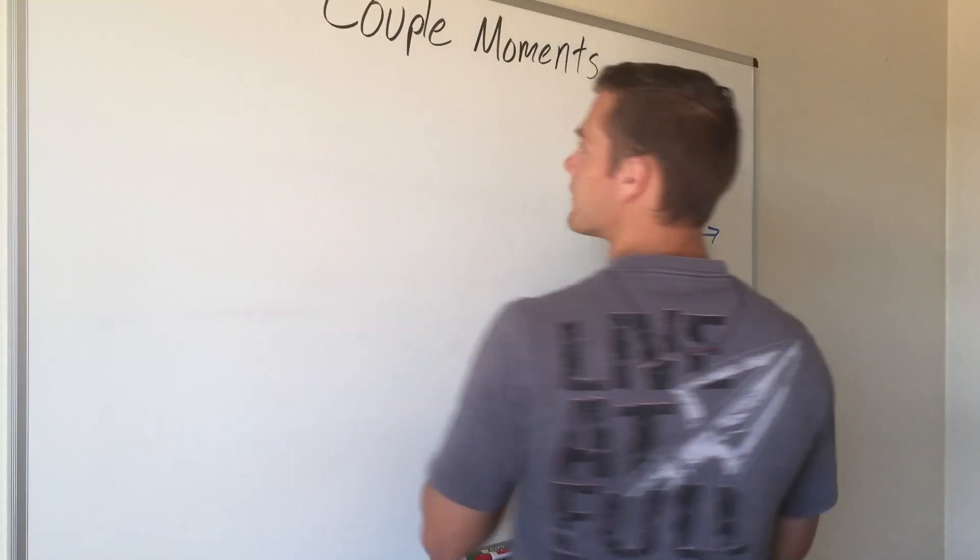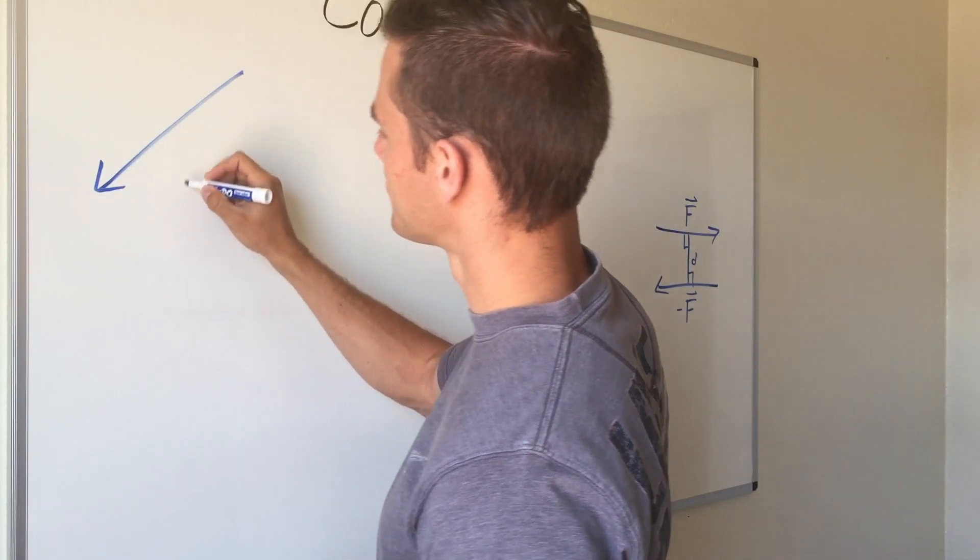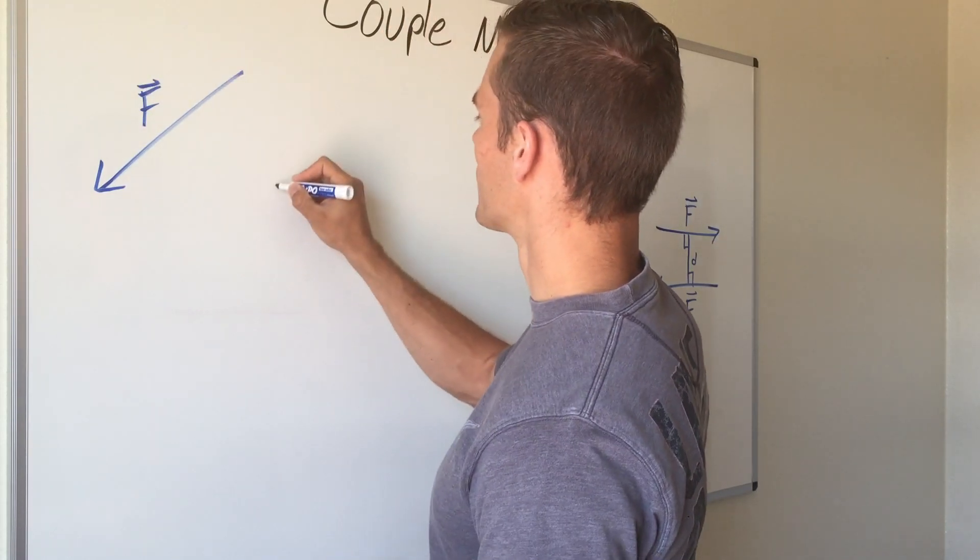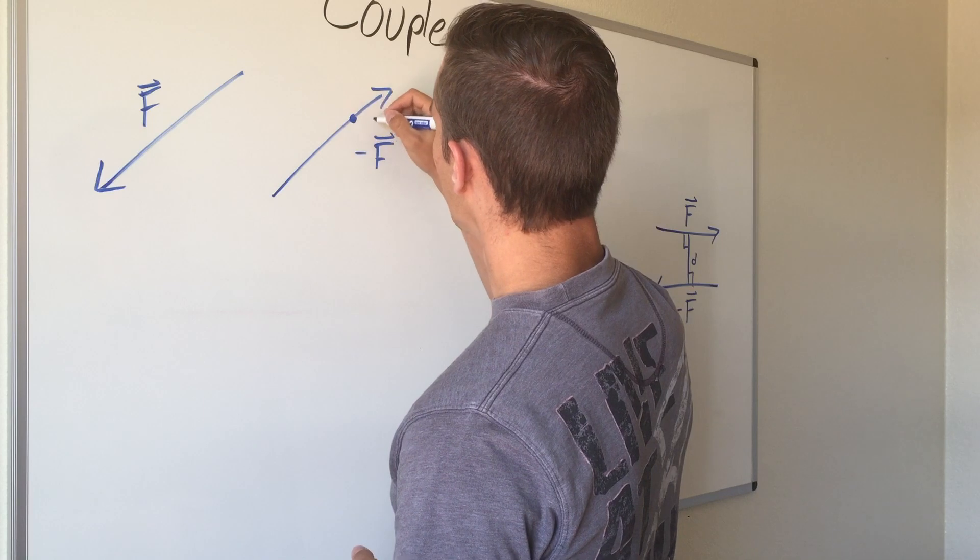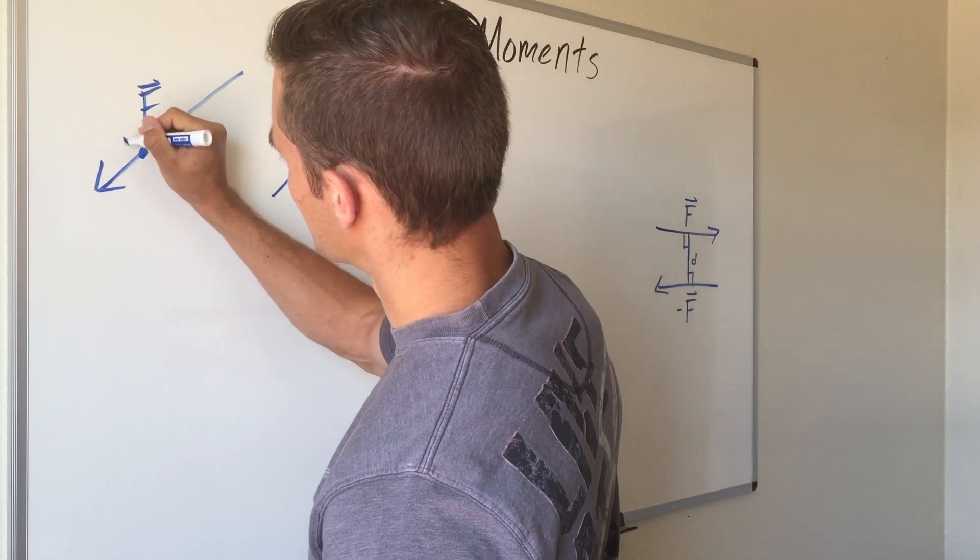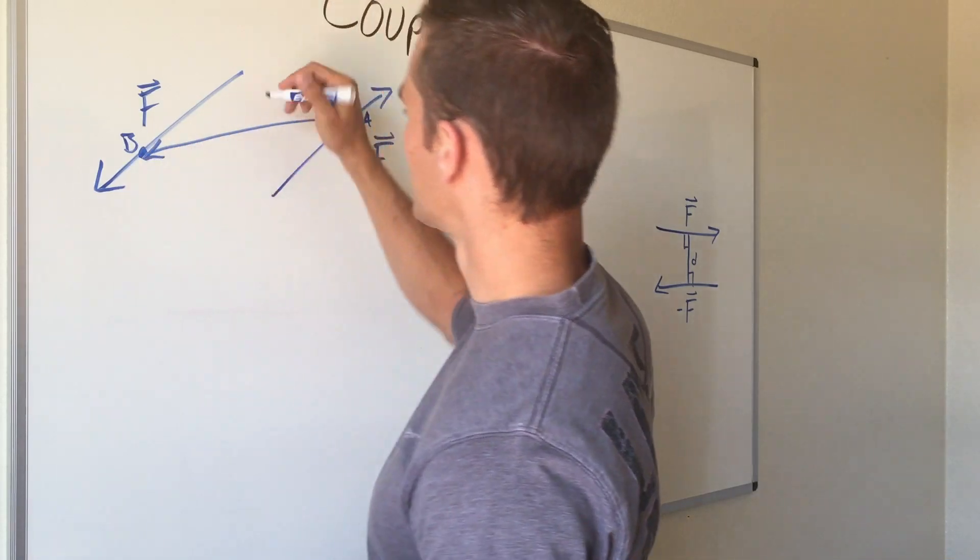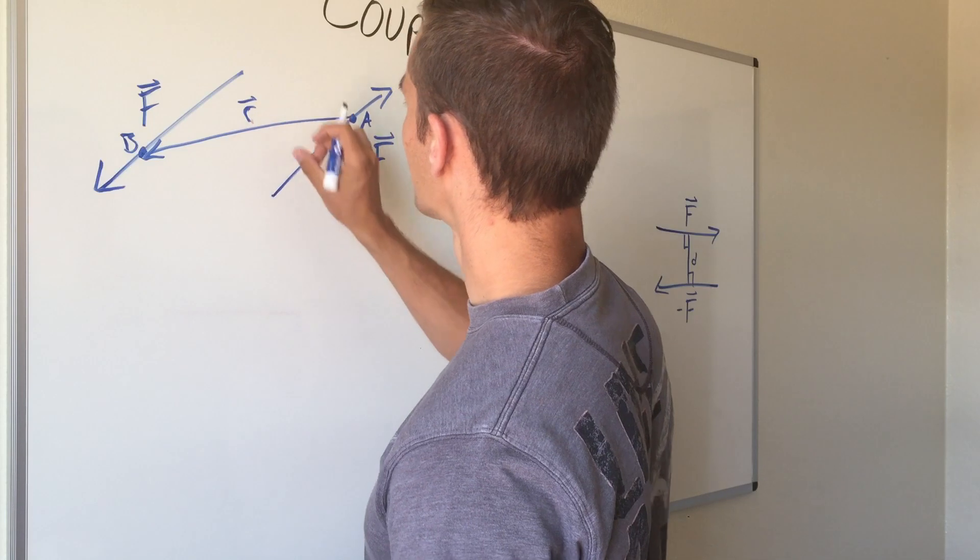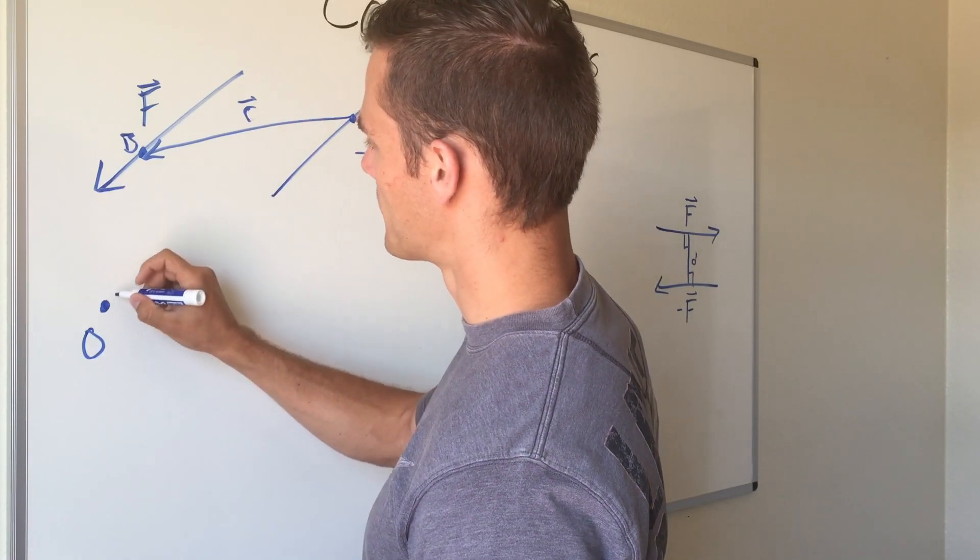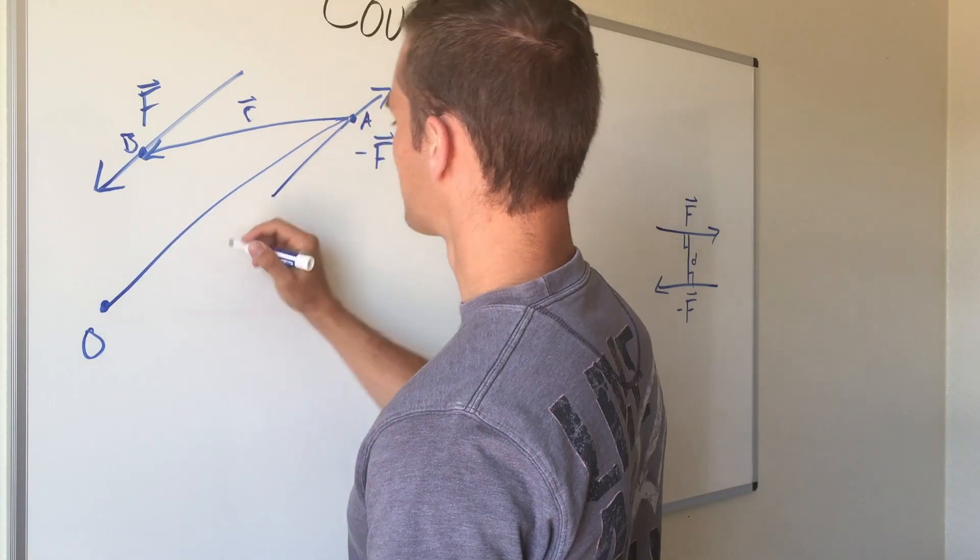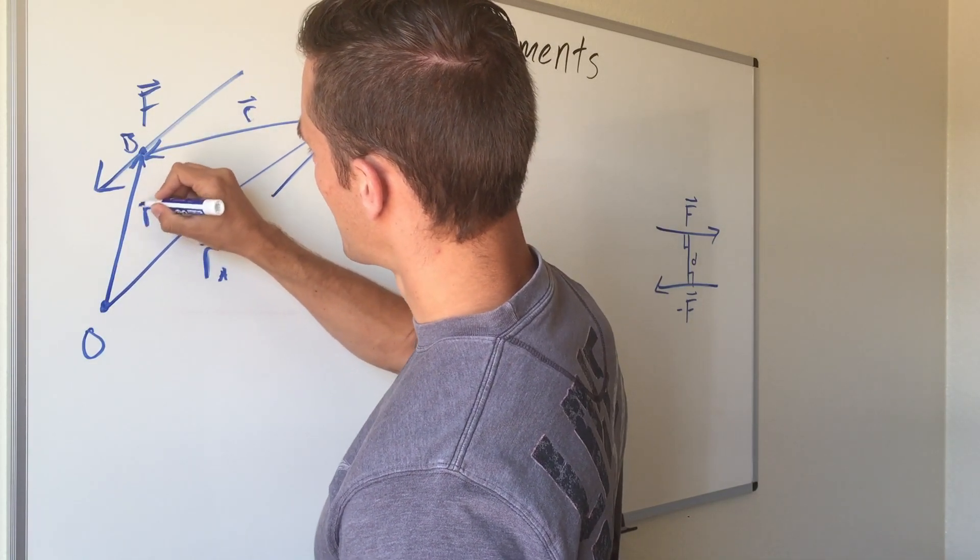How we prove that is if we have two vectors, we'll call it vector F and another one called negative F. We have two points on those forces, we'll call that one A and this one B, and we have a position vector going from point A to point B, and we'll call that position vector r. We're going to have another point out here, we'll call it point O, and it's going to have a couple position vectors coming off of that, one going to point A, we'll call this one r sub A, and another one going to point B, we'll call this r sub B.